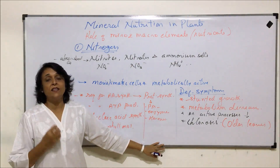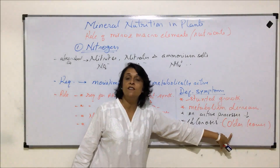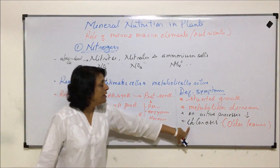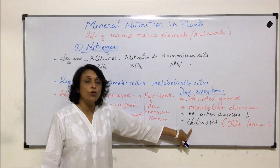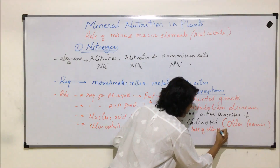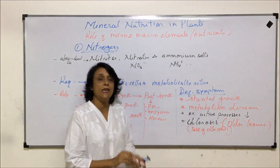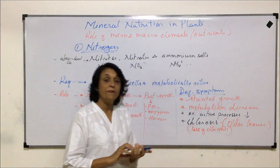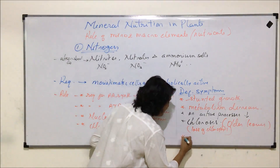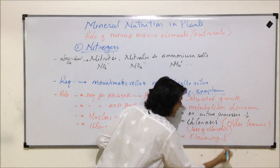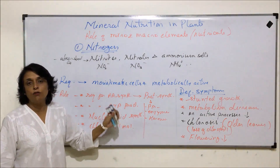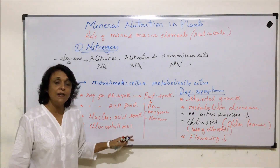When we finish discussing the roles of all macro and micro elements, we will talk about why certain symptoms appear first in older leaves and why some appear in newer or younger leaves — that is because of mobilization. What we have to remember here is chlorosis — that is, loss of chlorophyll — which is first seen in older leaves. One more symptom is that flowering decreases, meaning there are fewer flowers, and automatically fruits and seeds are produced in smaller numbers and smaller size.